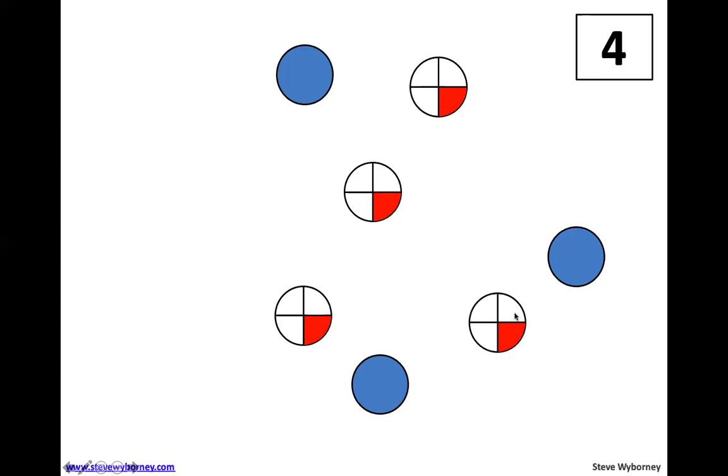4 fourths would be a whole. And so that would be 1 whole, 2 wholes, 3 wholes, 4 wholes.